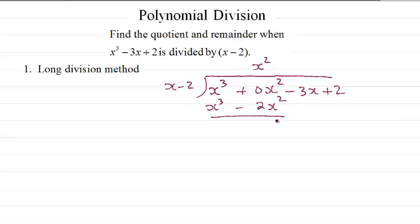Now we find the remainder here. 0 minus minus 2, 2x squared. Bring this term down. Now we need to eliminate 2x squared. So x times 2x will give us 2x squared. Then 2x times minus 2, minus 4x.